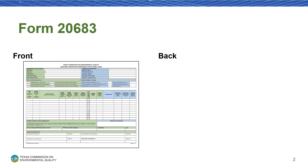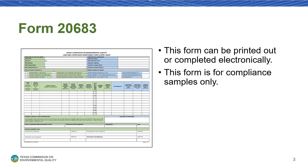In this video, we will walk through how to complete the first page. This form is available on the TCEQ Lead and Copper website. You can print out this form and complete it by hand, or complete it electronically as a PDF before printing it to be signed. If you choose to complete this form electronically, please make sure you download it first, as errors can occur when completing this form in your internet browser.